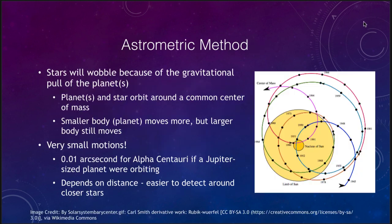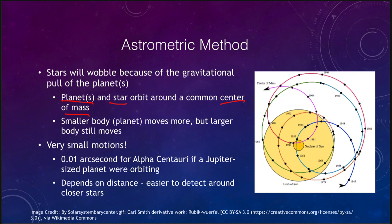Let's look at the astrometric method first. Stars will wobble because the planets are pulling on them. In reality, we talk about a planet orbiting around a star, but they actually orbit around a common center of mass. So really both the planet and the star orbit — it's just that the star's orbit is often within the star itself. The image here shows where the center of mass of the solar system is: sometimes it is outside the sun by a little bit, and other times it is actually deep inside the sun, depending on the relative positioning of the planets at the time. A distant astronomer would be able to see the sun wobbling a little bit in its position.